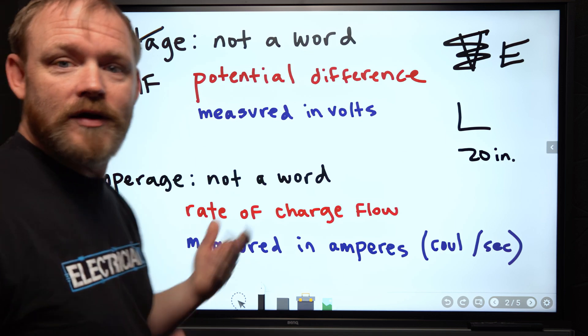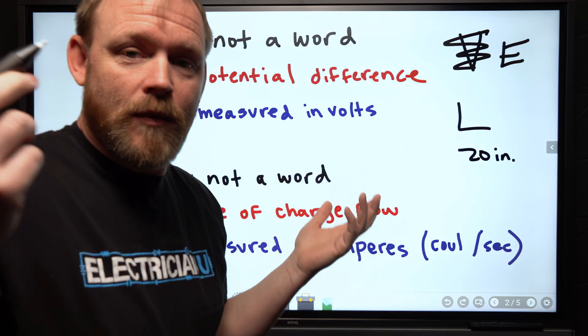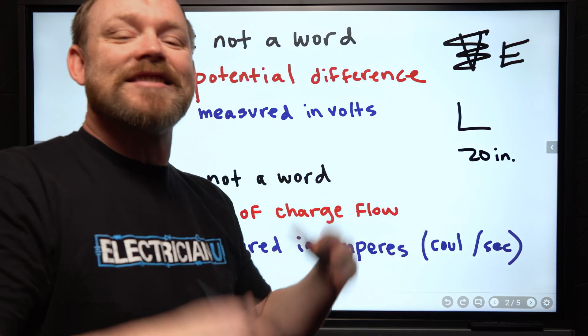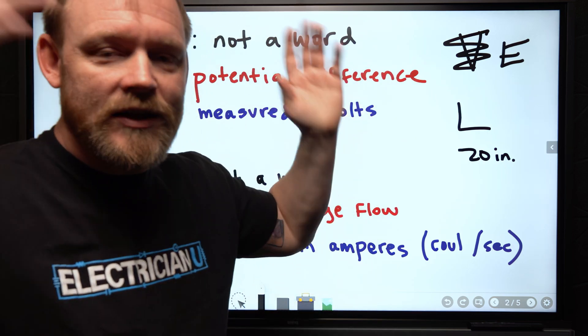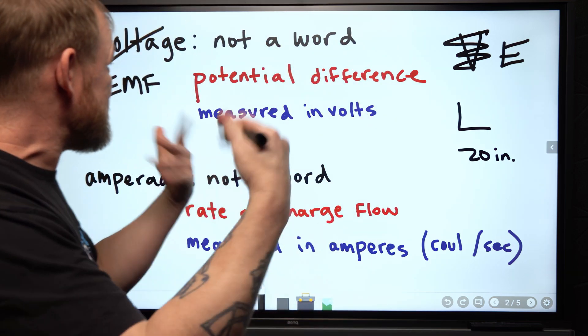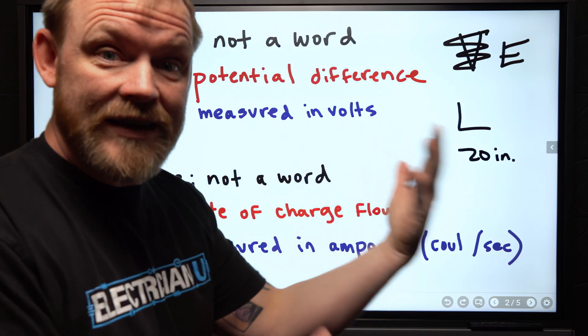Same thing for amperage. There is no word amperage. This is just a word that we say out in the field. Does anybody care? No, it's fine. You can use it. I use amperage. I use voltage all the time. But to be specific in why we're using E and I,